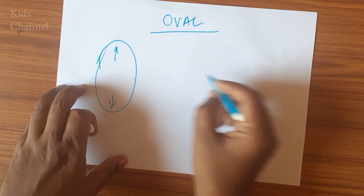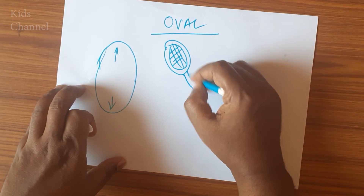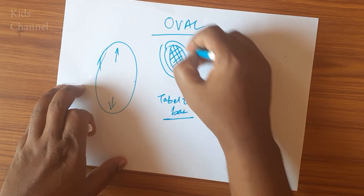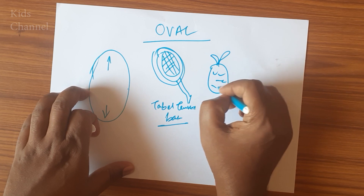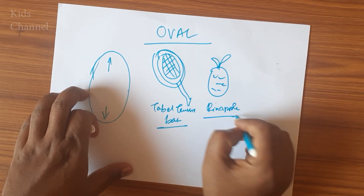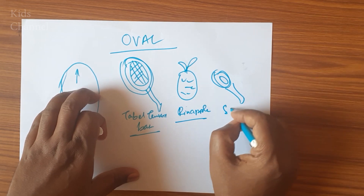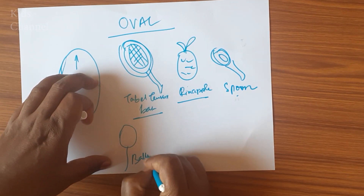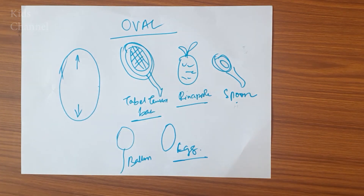A table tennis bat looks like an oval shape. Pineapple looks like an oval. A spoon looks like an oval. And a balloon looks like an oval. By all these things, kids can recognize which objects are in which shape.